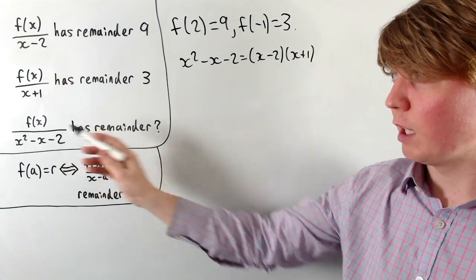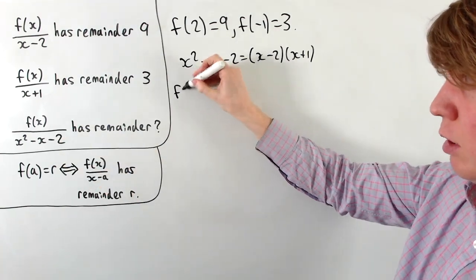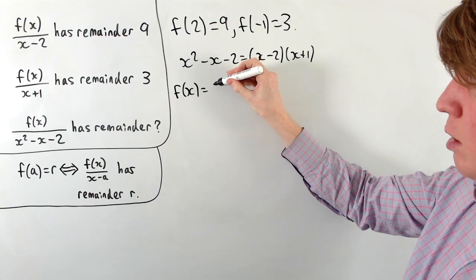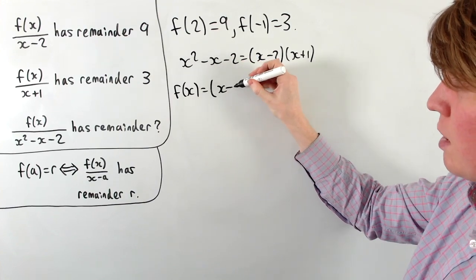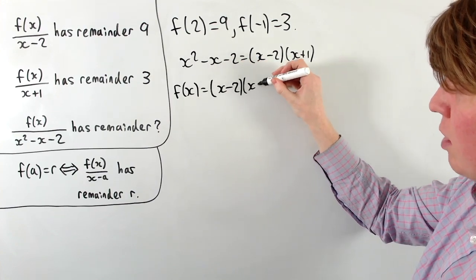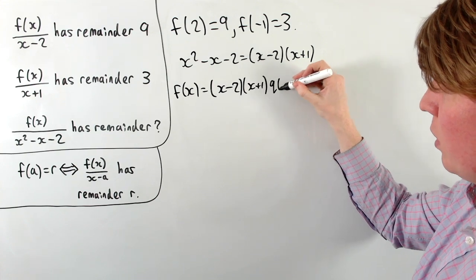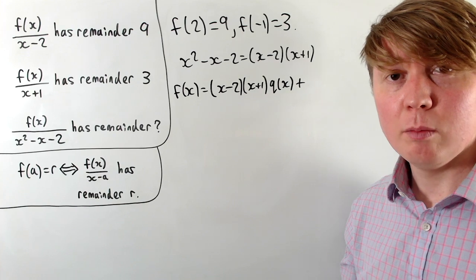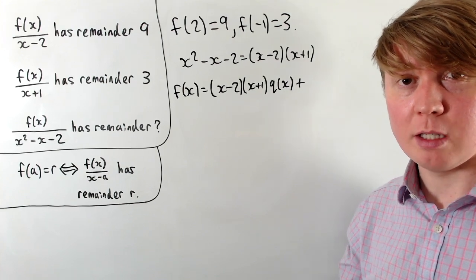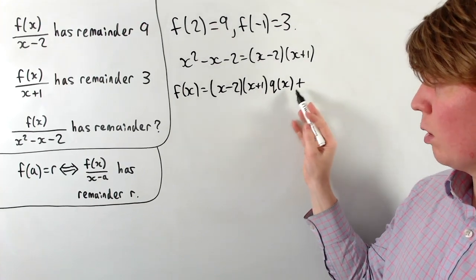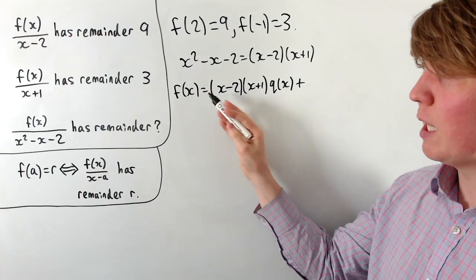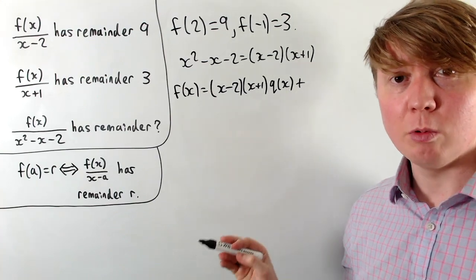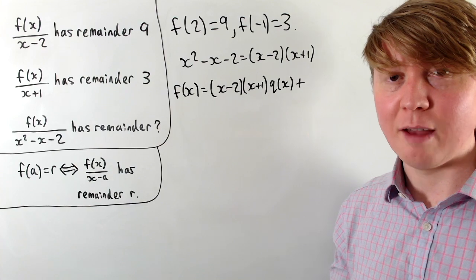So now when we want to divide f(x) by this quadratic term, we're effectively looking for f(x) is equal to this quadratic, so let me write this in the factorized form like this, times some polynomial q(x), and we've got plus a remainder term. When we're dividing by a quadratic, you can think of this as choosing a polynomial q(x) so that we make all of the coefficients match with our coefficients in the polynomial f(x).